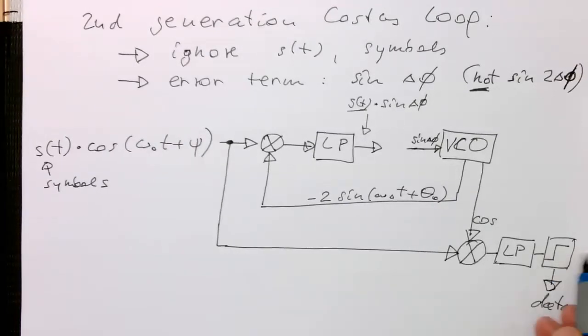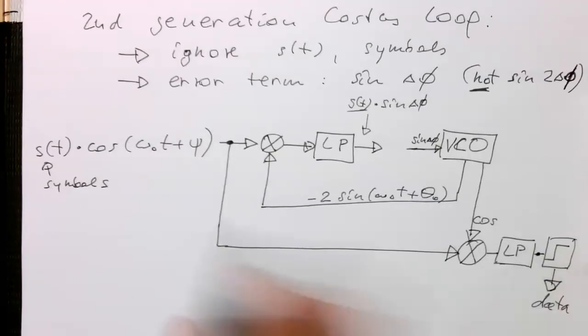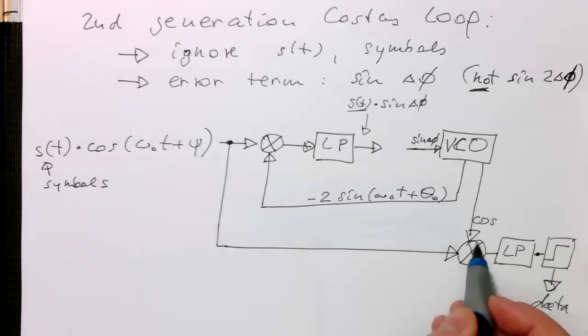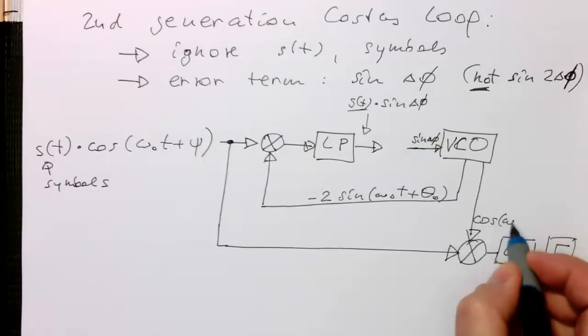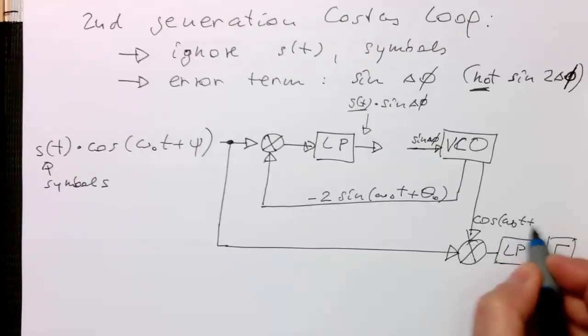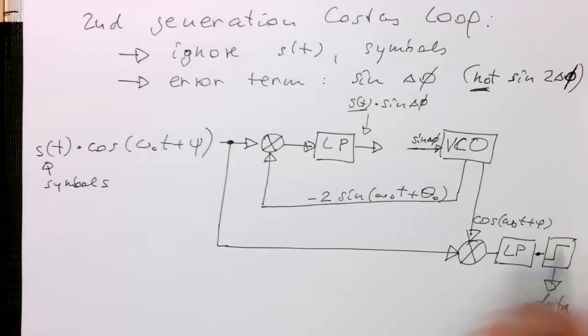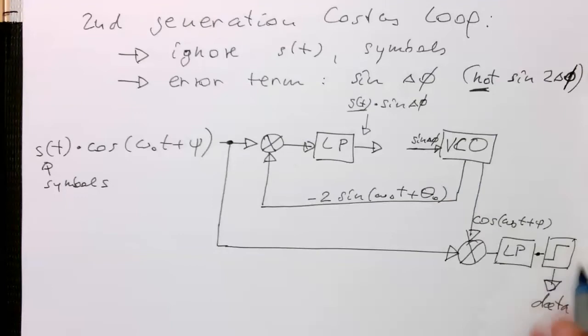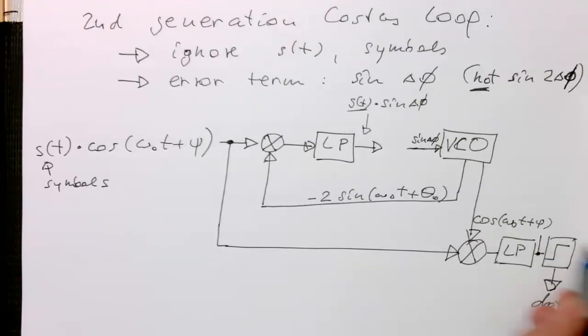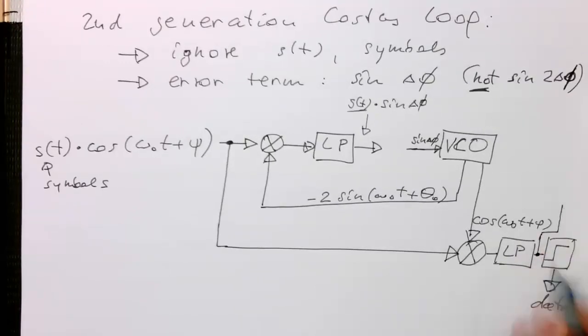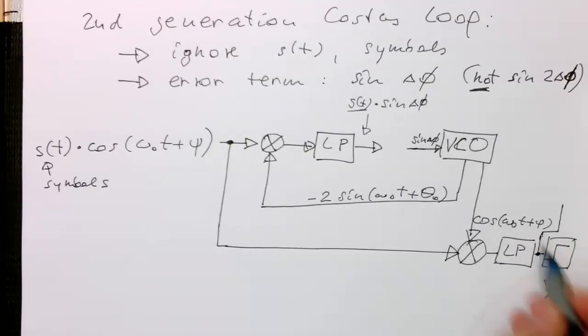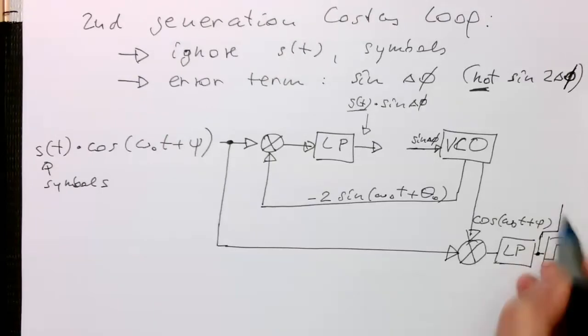We threshold this and then this output of the threshold is obviously our data stream, or what we can reconstruct of this. The interesting thing is now at this point here, we are getting S of T out there. So we are doing our low-pass filtering operation with omega zero T. This gives us obviously our demodulated symbol. So we use this output here, this low-pass filtered output, and use this to undo our S of T.